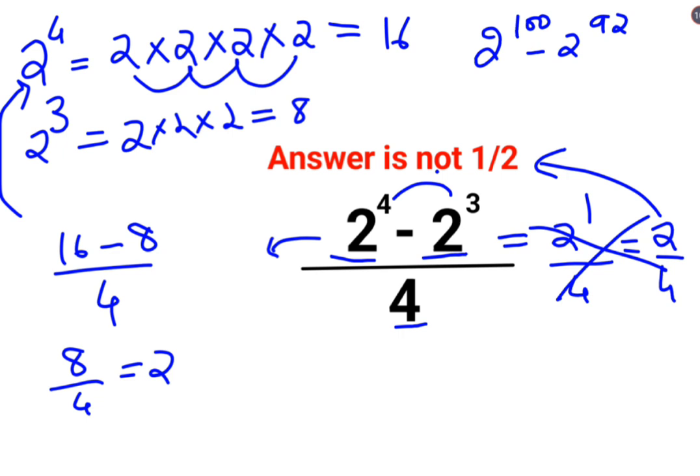If that is the case, then what should you do? So here please understand that 2 raised to 100 can be written as 2 raised to 92 plus 8 minus 2 raised to 92.